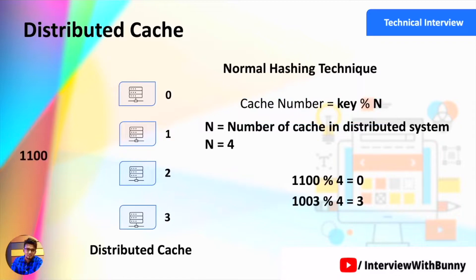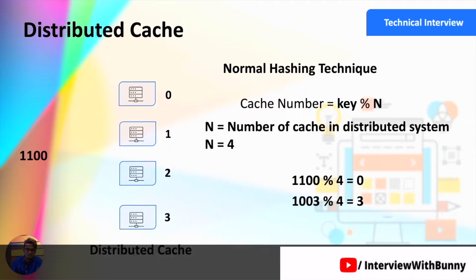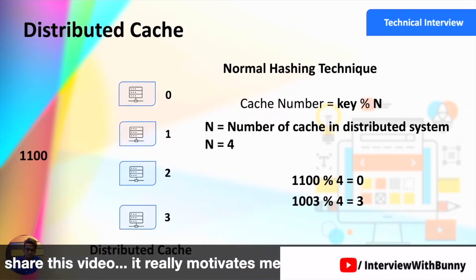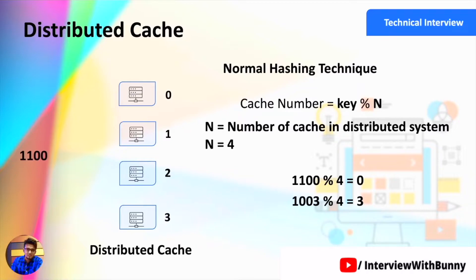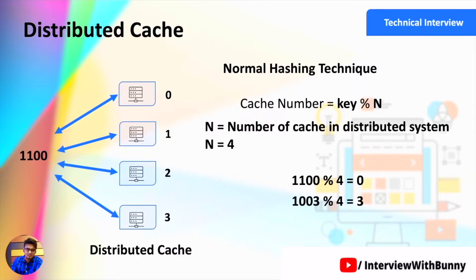The general mechanism by which we create a mapping between data and server is by using a normal hashing technique. Each data item with some request ID is passed through a hash function which gives a corresponding hash value. For example, assume that 1100 is the request ID for a particular data item. When storing the data, we pass this value through our hashing mechanism. The cache number — the location where the data will reside — is determined by key mod n, where n is the number of caches and key is the request ID. Here, 1100 mod 4 equals 0, so this data resides on cache number 0.